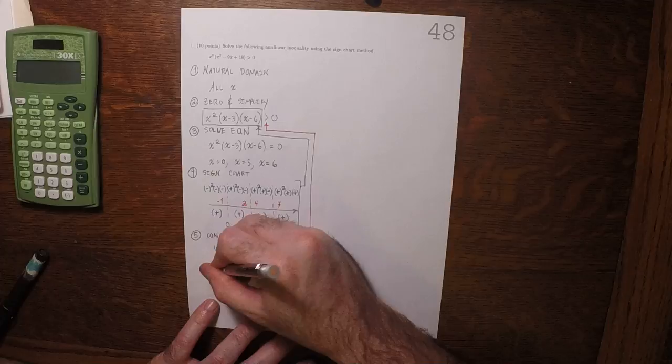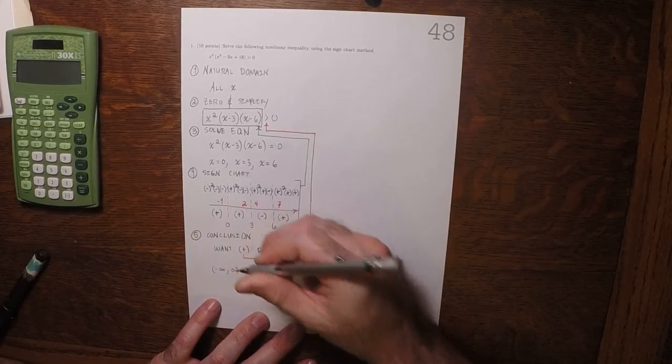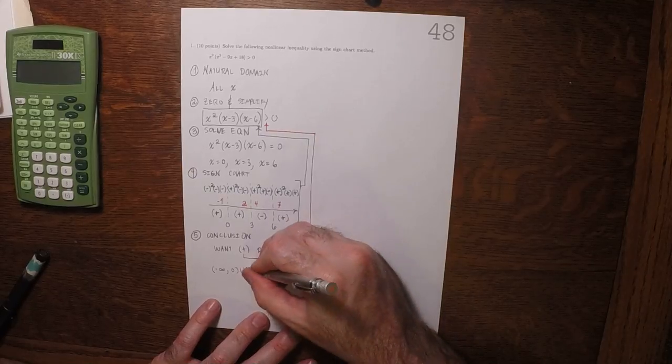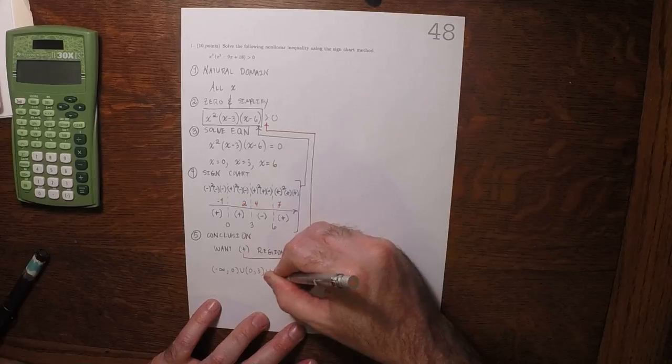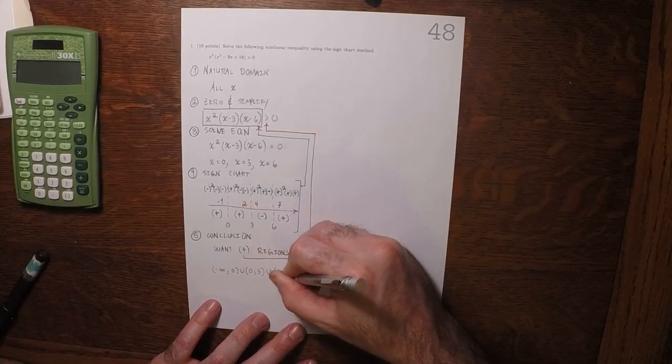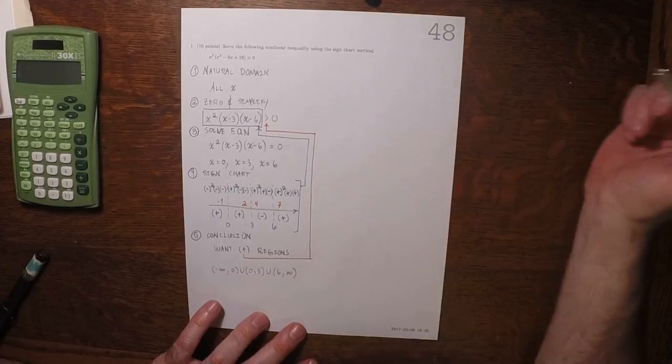Okay, so then the answer is negative infinity to 0, union 0 to 3, union 6 to infinity. So, that's the answer to the question.